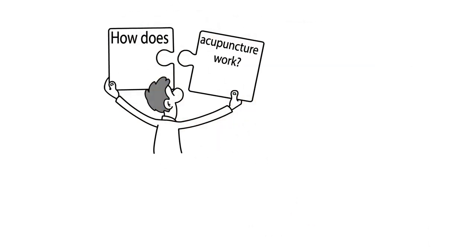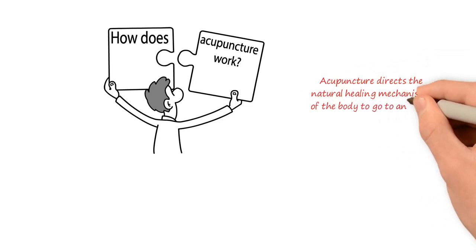How does acupuncture work? What we are going to describe here is how acupuncture works to heal injuries to the body. In a nutshell, acupuncture directs the natural healing mechanisms of the body to go and heal the areas we ask them.